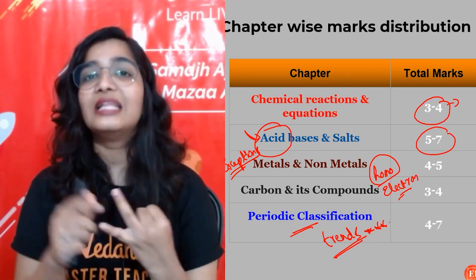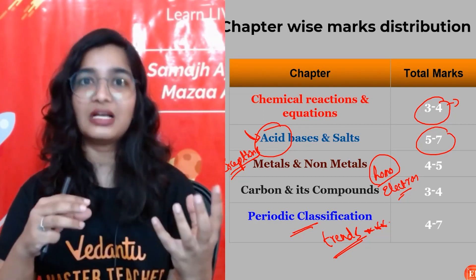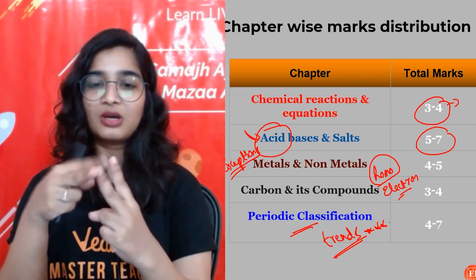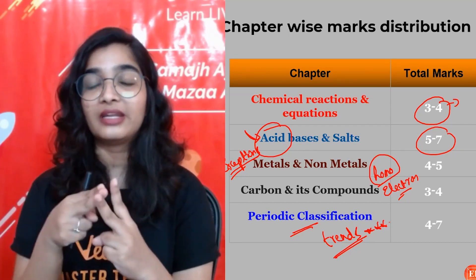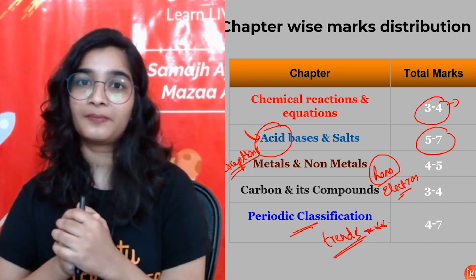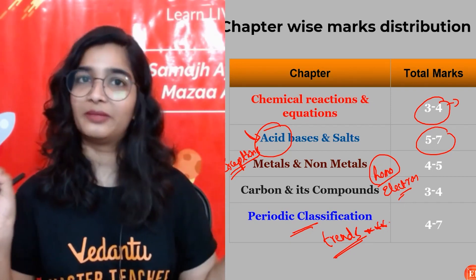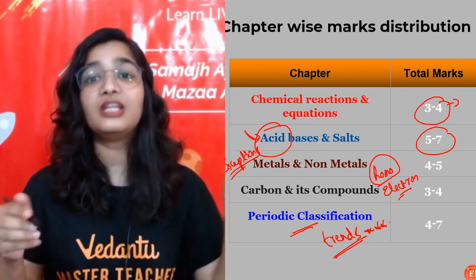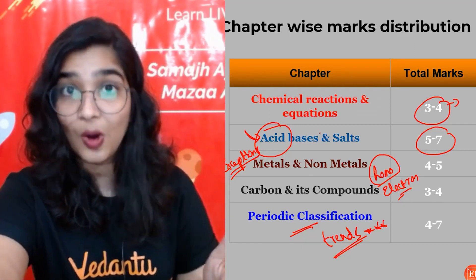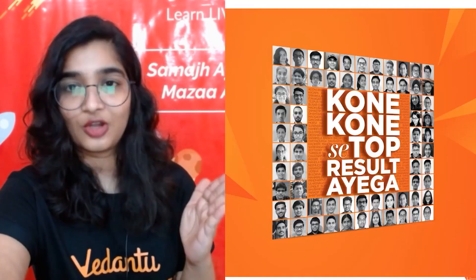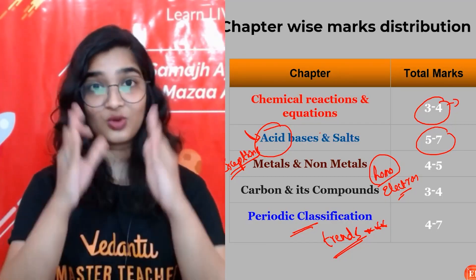For Mendeleev's periodic table, know the merits and demerits. For Döbereiner's Triads, they will give the atomic masses of the first and third elements and ask you to calculate the atomic mass of the second — just take the average. For Newland's Law of Octaves, know the demerits. This covers the chapter-wise marks distribution along with important topics for all five chapters.